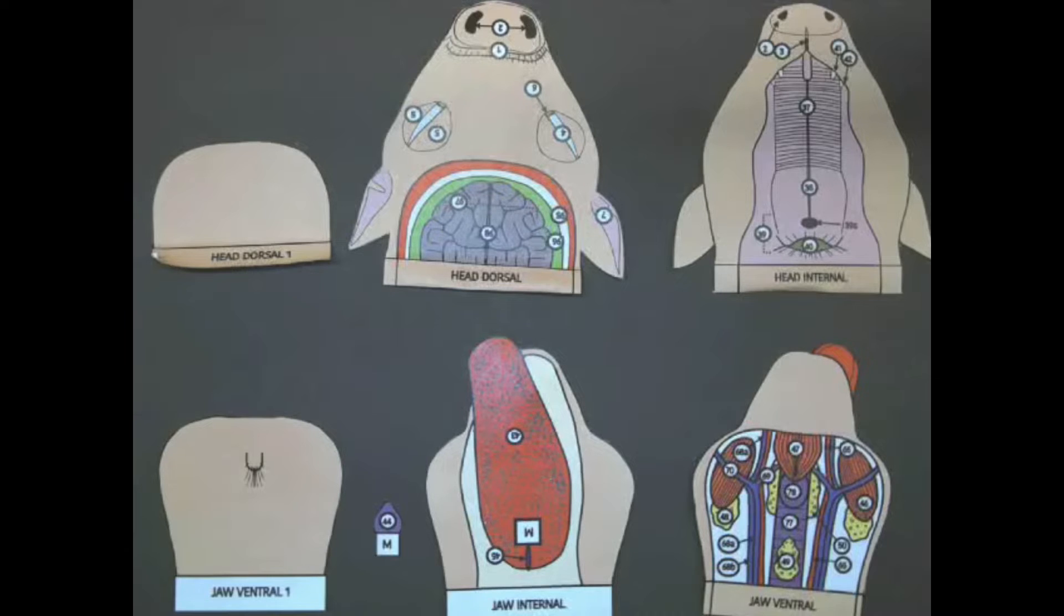We're first going to assemble the top of the pig's head. You're going to need the three pieces that are being shown at the very top. At the bottom of each piece there is some text.